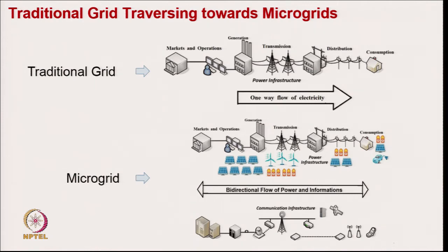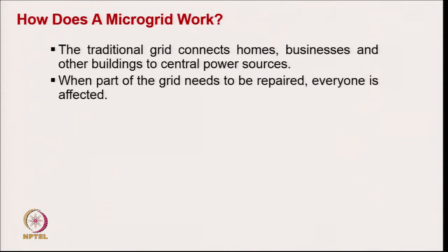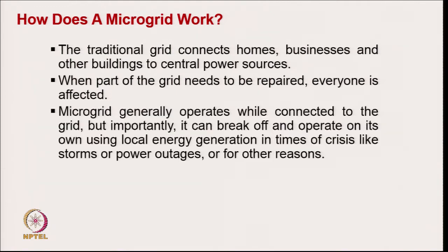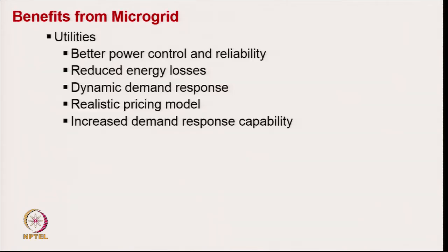How does a microgrid work? The traditional grid connects homes, businesses, and other buildings to central power sources, and when part of the grid needs to be repaired, everyone is affected. A microgrid generally operates while connected to the grid, but importantly it can break off and operate on its own using local energy generation in times of crisis like a storm, power outage, or for other reasons. Microgrids are fueled by distributed generators, batteries, and renewable energy sources.